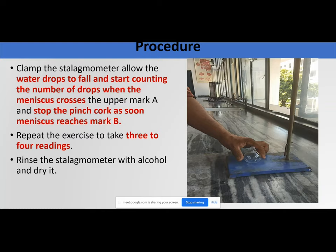You will note down the number of drops between marks A and B, and repeat this exercise at least three times. Repeating is necessary because if any procedural or working errors are included in one reading, taking multiple readings allows you to nullify them and reduce the error margin.